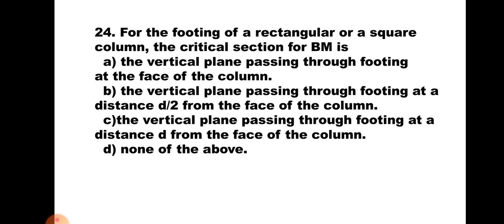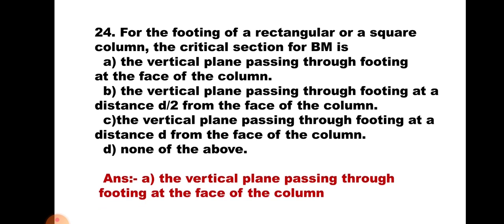Question number 24. For the footing of a rectangular or square column, the critical section for bending moment is: A) the vertical plane passing through the footing at the face of the column, B) at a distance d/2 from the face, C) at a distance d from the face, or D) none of the above. According to IS 456, the critical section for bending moment is always taken as the vertical plane passing through the footing at the face of the column. Hence the correct answer is A.